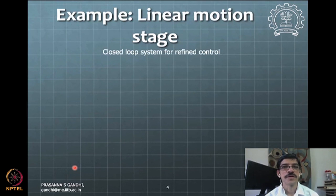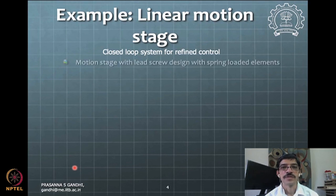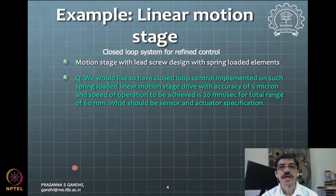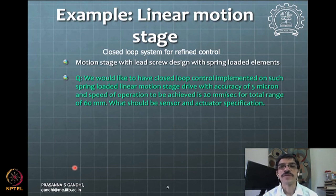Let's take an example of a linear motion stage and work through how to get to specifications. Consider a lead screw configuration with spring-loaded elements. For closed-loop control, the requirements are: drive accuracy of 5 microns, speed of 20 mm per second, and range of 60 mm. The question is: what should the sensor and actuator specifications be?